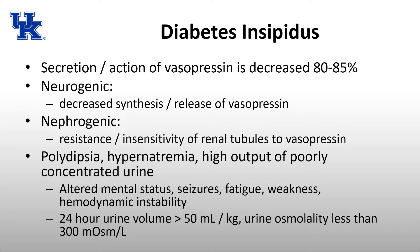Diabetes insipidus occurs when the secretion or action of vasopressin is decreased by 80 to 85 percent. It's broken into neurogenic and nephrogenic diabetes insipidus. Neurogenic means there is decreased synthesis or release of vasopressin — the hypothalamus is not making it or the posterior pituitary is not releasing it. Nephrogenic means the hypothalamus makes vasopressin and the posterior pituitary releases it, but the renal tubules do not respond appropriately — there is resistance or insensitivity to vasopressin. This results in polydipsia, hypernatremia, and a high output of very poorly concentrated urine.